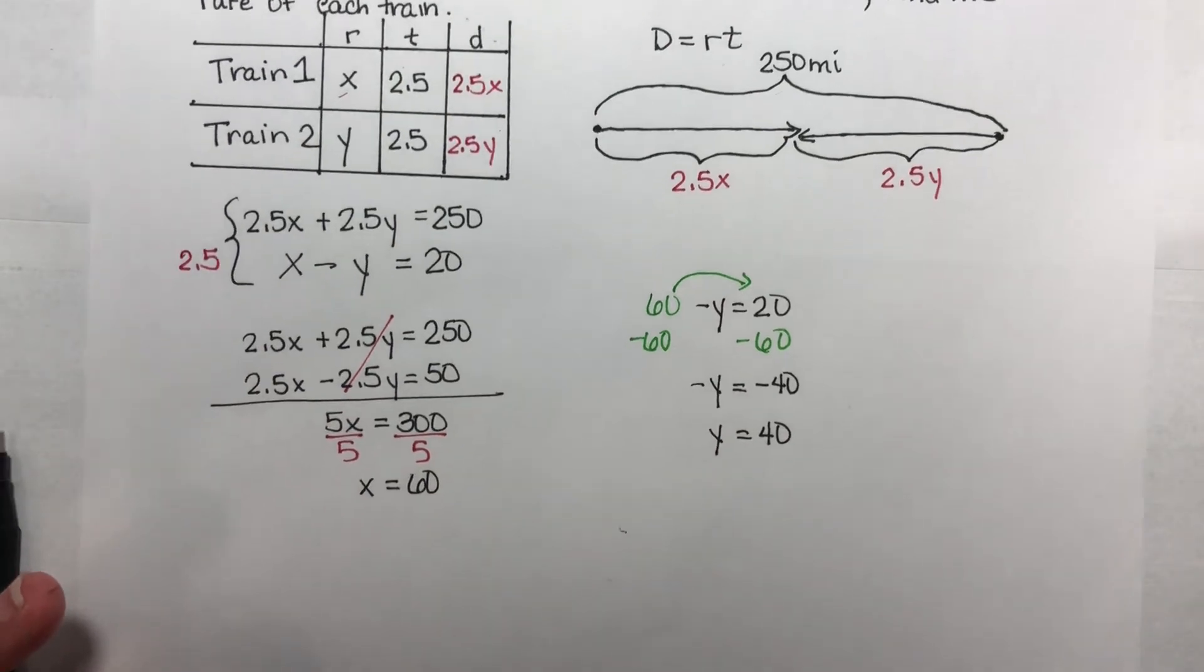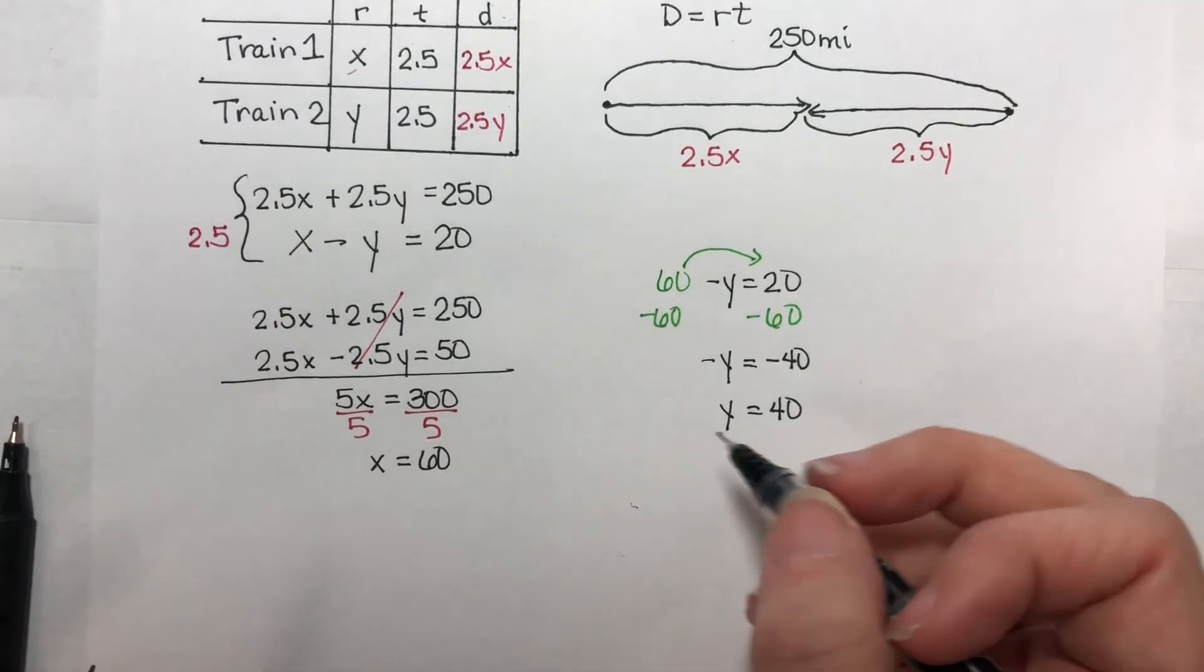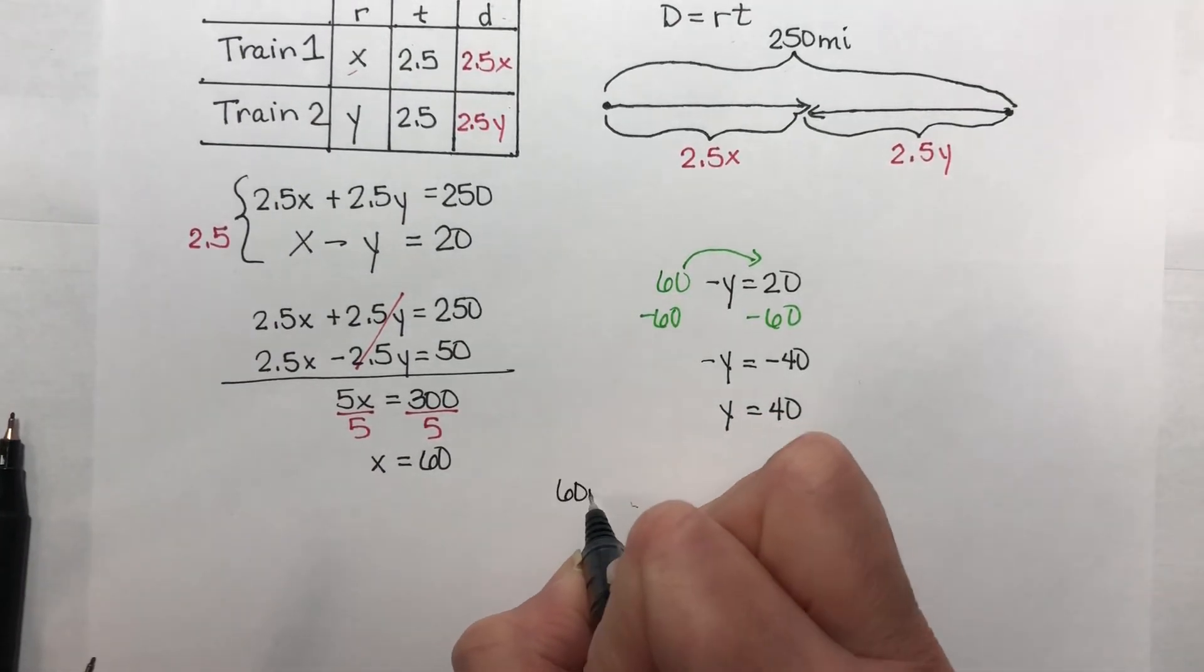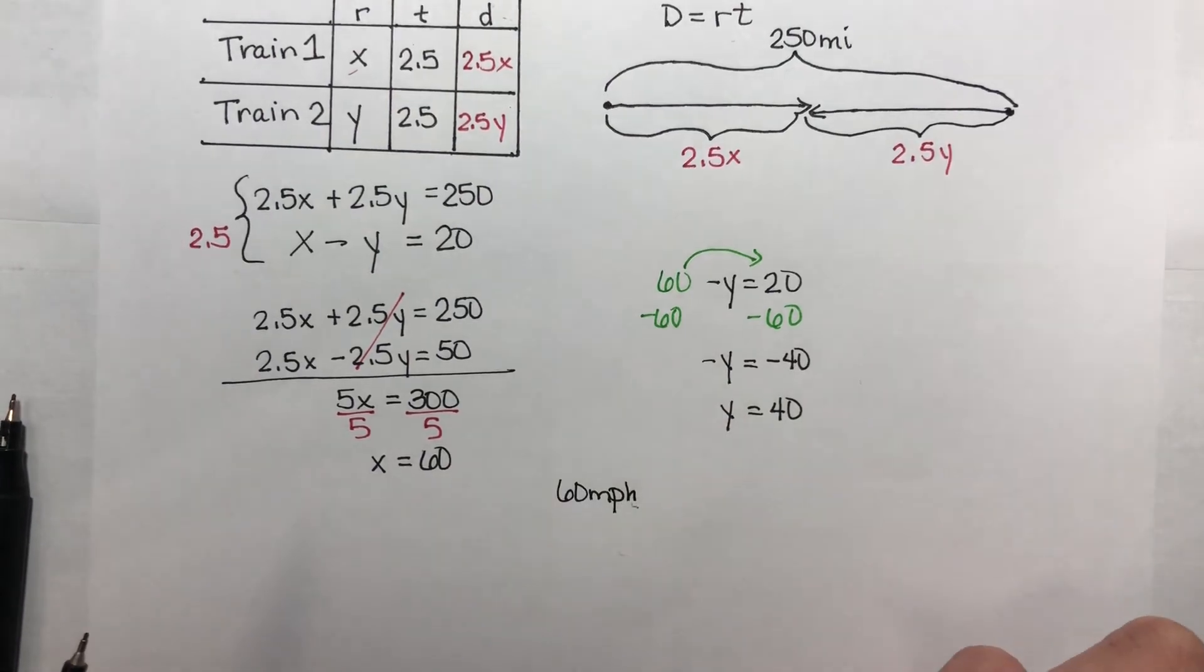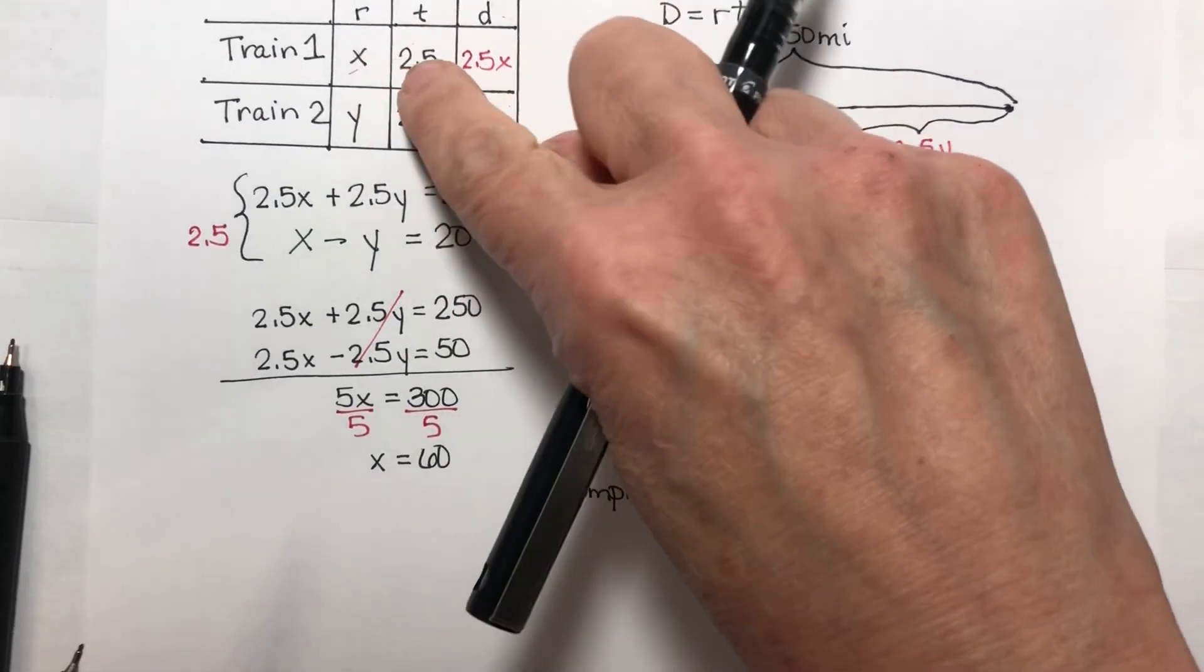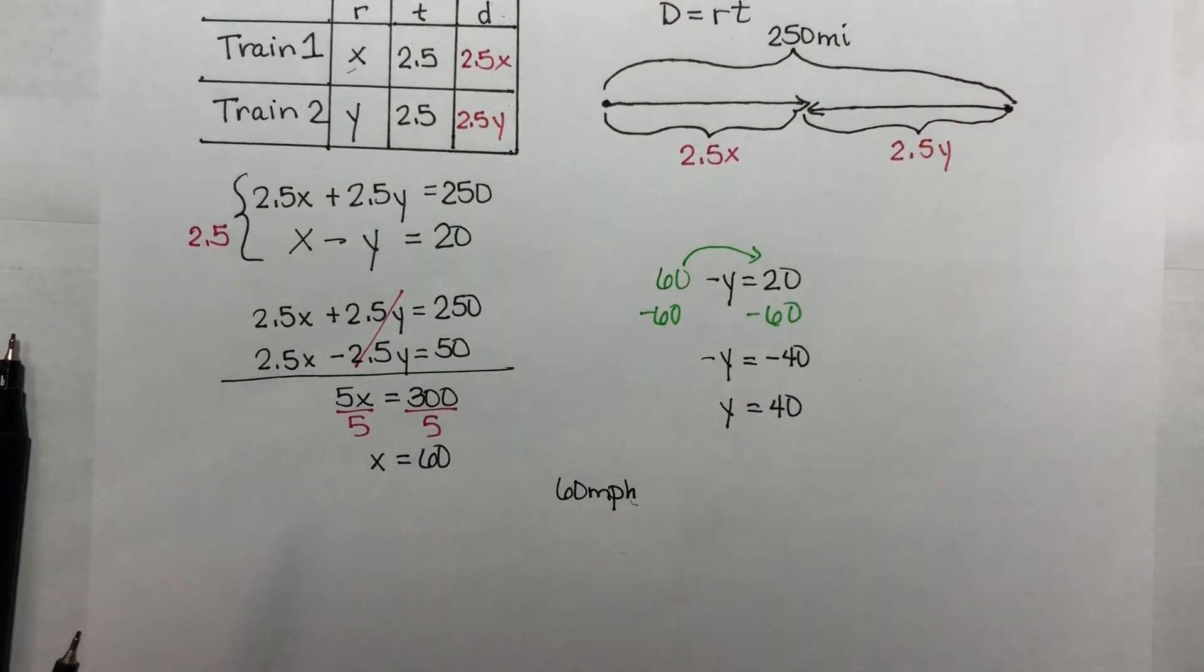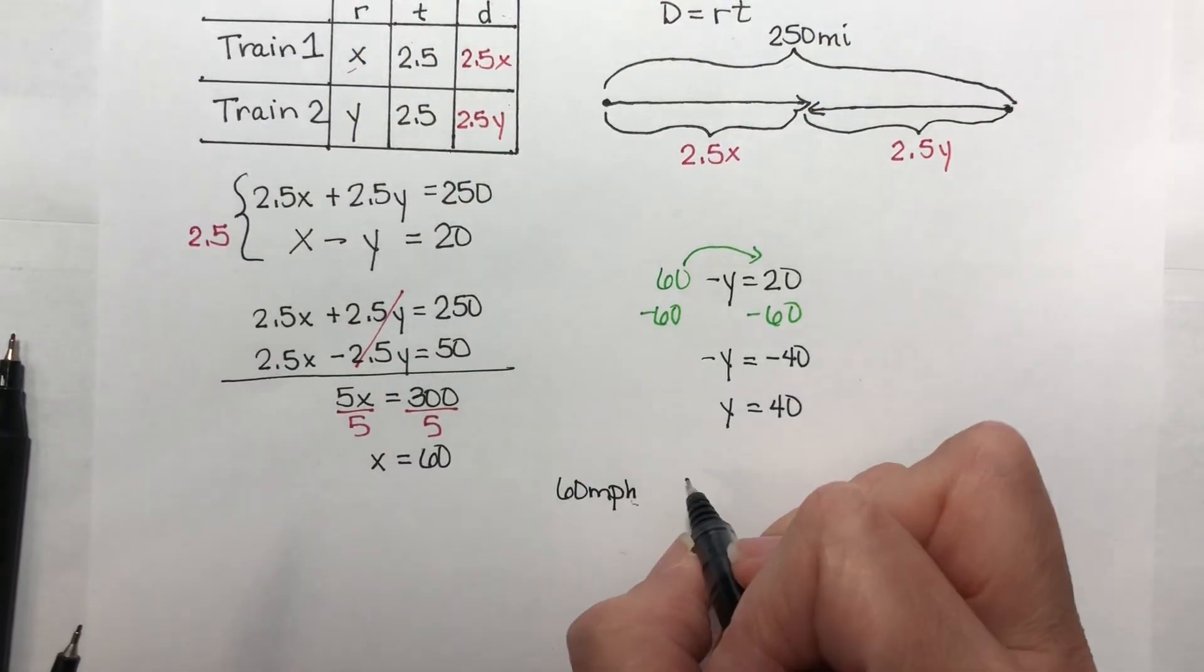So what have we found? We found that one train is going 60 miles per hour. That's our faster one, which we applied to train one, although it wasn't necessary. The other train is going 40 miles per hour. And those should be your answers.